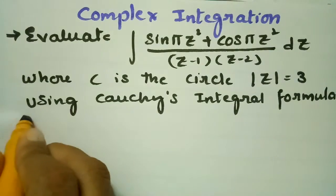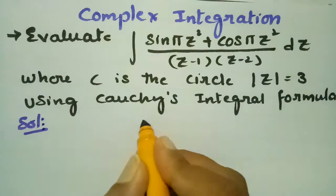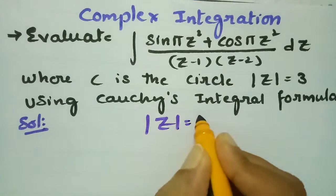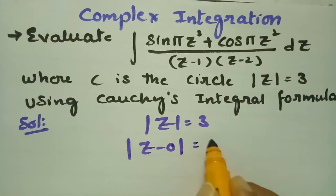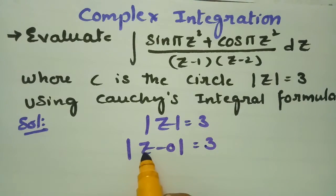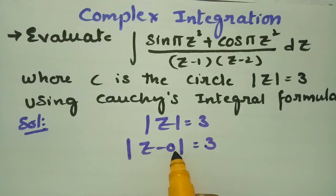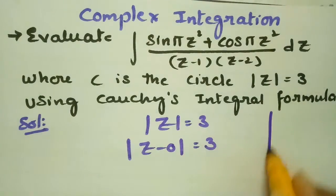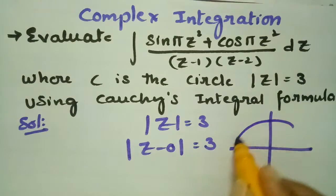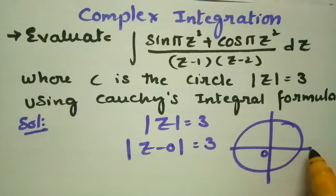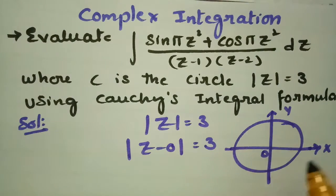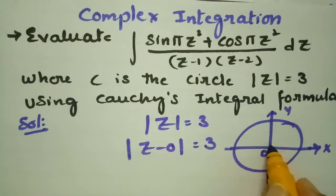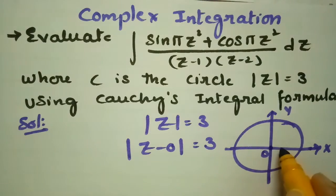Here it is very clear that |z| = 3 is given. This can be written as |z − 0| = 3, so this is a circle equation with center 0 and radius 3. Here is the circle with the x-axis and y-axis shown, centered at 0 with radius 3.